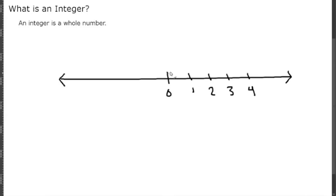But just like you can go to the right of zero on a number line and get greater than zero, you can go to the left of zero and get less than zero. So this would be one away from zero, two away from zero, three away from zero, and four away from zero.